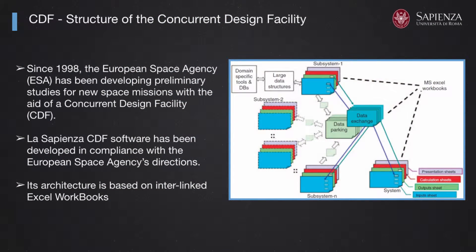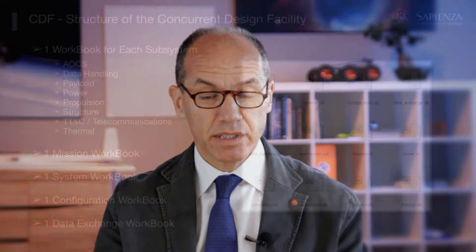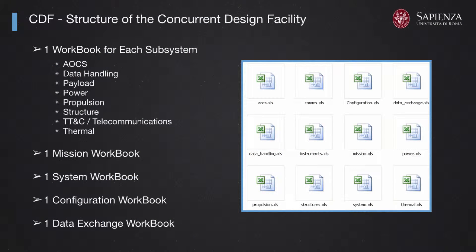In each workbook there is an area of competence represented, and in each set of worksheets you have input, output, and calculation worksheets. We have developed one workbook for each subsystem: attitude control system, data handling, payload, power, propulsion, structure, TT&C, and thermal. Then we have one workbook for mission, one for system, one for configuration, and a data exchange workbook.